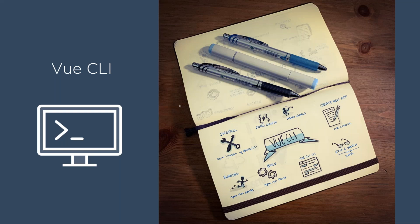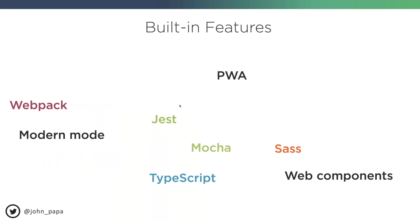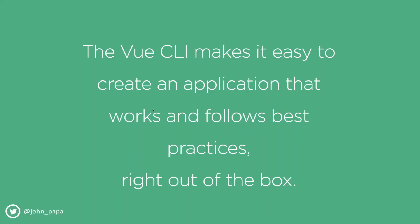The Vue CLI includes many things out of the box. You can set up Stylus, CSS, or Sass; testing frameworks like Jest, Mocha, or Cypress; TypeScript or plain JavaScript — all by just setting a flag. The key is that it makes it easy to create an app that just works. In today's modern JavaScript world, I like not having to deal with all the setup — I want the CLI to do that for me.